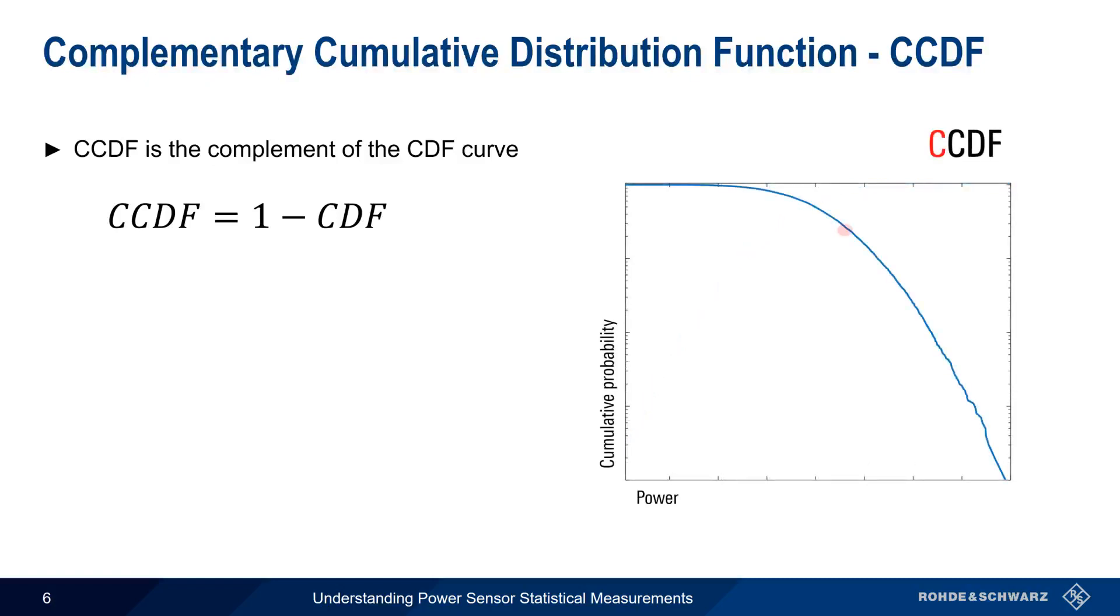Let's pick a point on the CCDF curve. Here, a power value of plus 10 dBm corresponds to a probability of only 0.05. This means that our signal power reaches plus 10 dBm or higher only 5% of the time. For this reason, we say that the CCDF curve emphasizes the maximum or peak power values, since it tells us what percentage of time the signal's power is at or above a certain value.